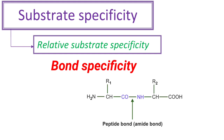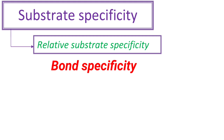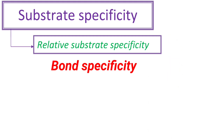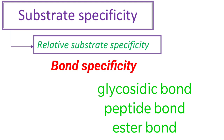In the same way, proteolytic enzymes act only on peptide bonds — they cannot act on glycosidic bonds. And lipases act only on ester bonds; they cannot act on peptide bonds or glycosidic bonds. So here, the enzymes are specific to the type of bond. Whether the substrate may be different, if it contains a particular bond, these enzymes will act on and break those bonds.